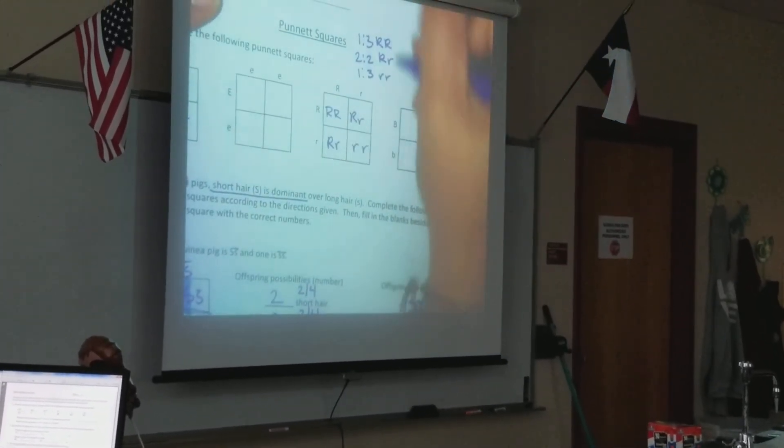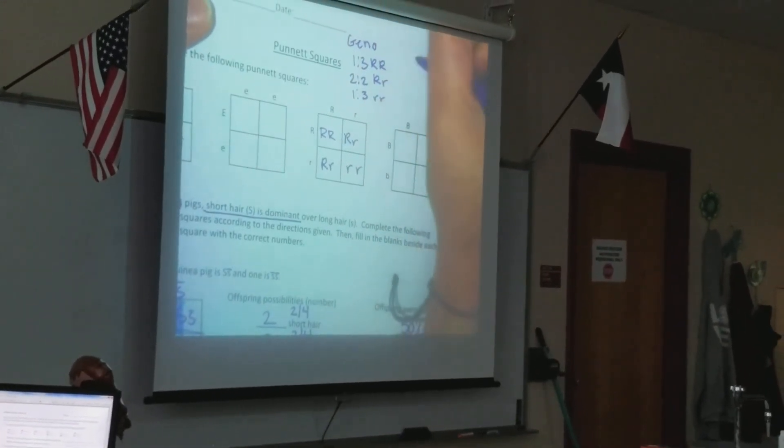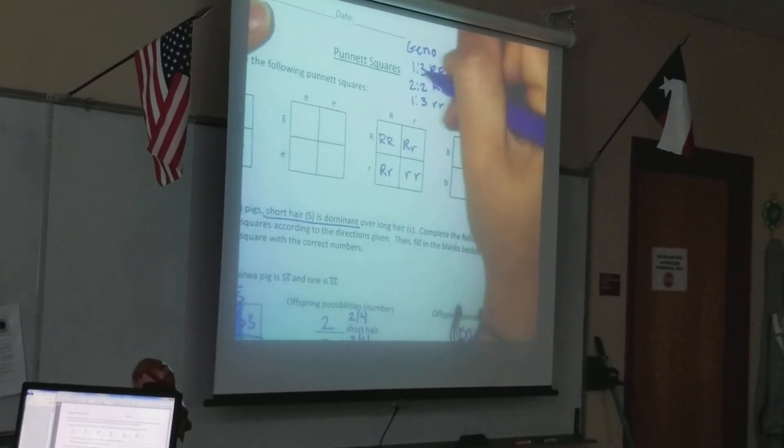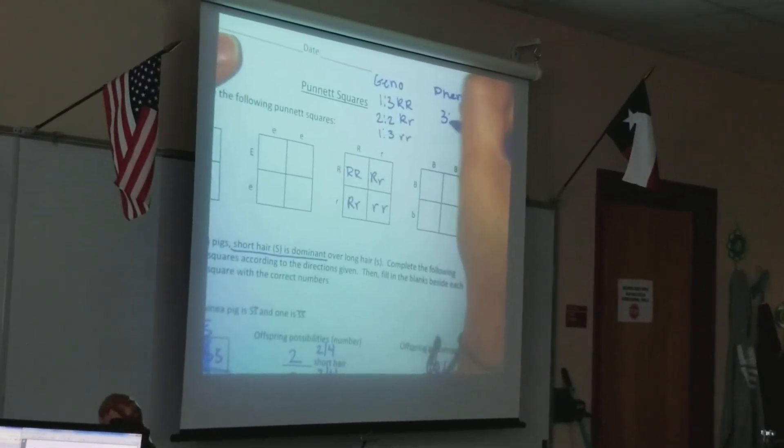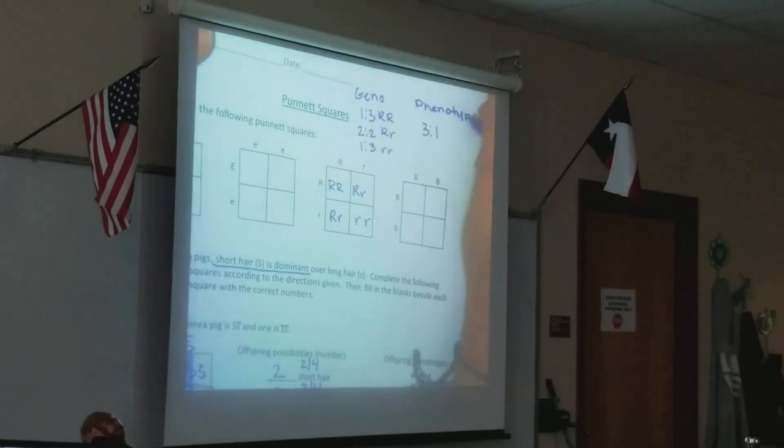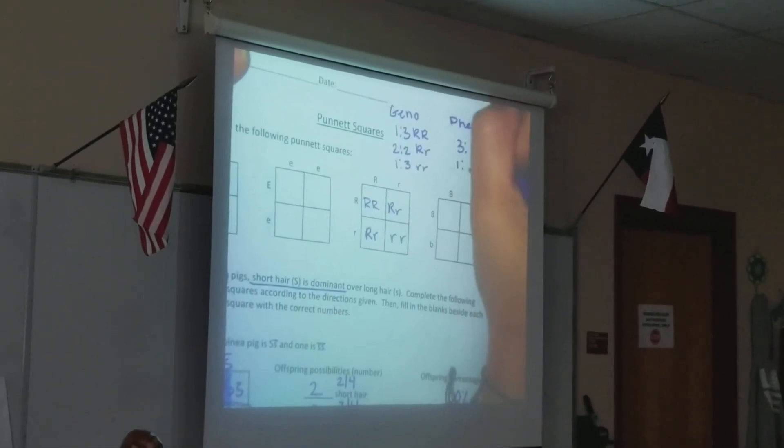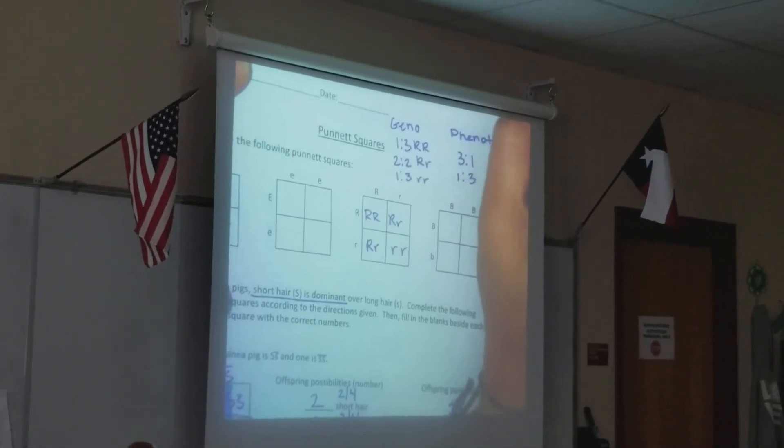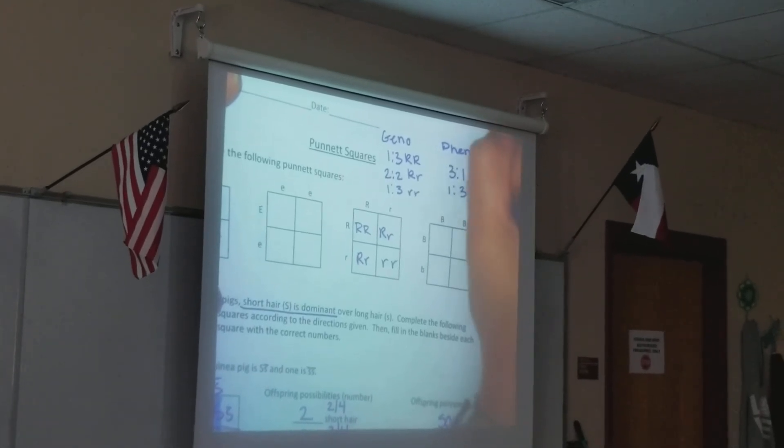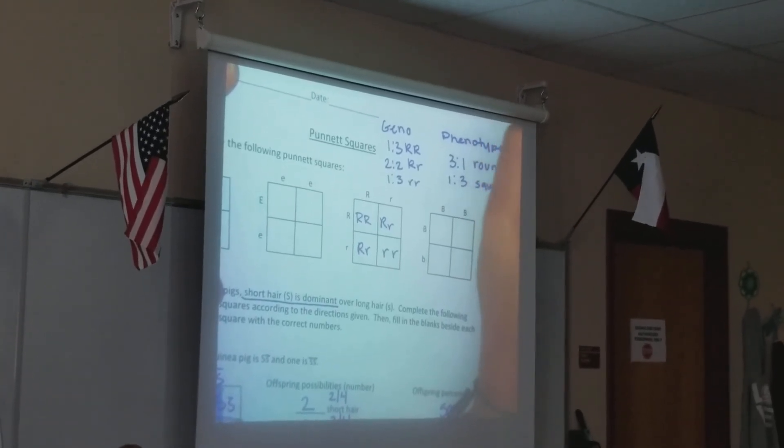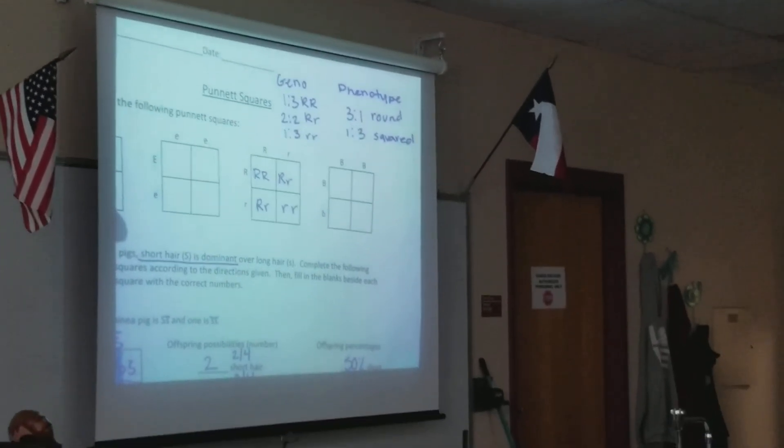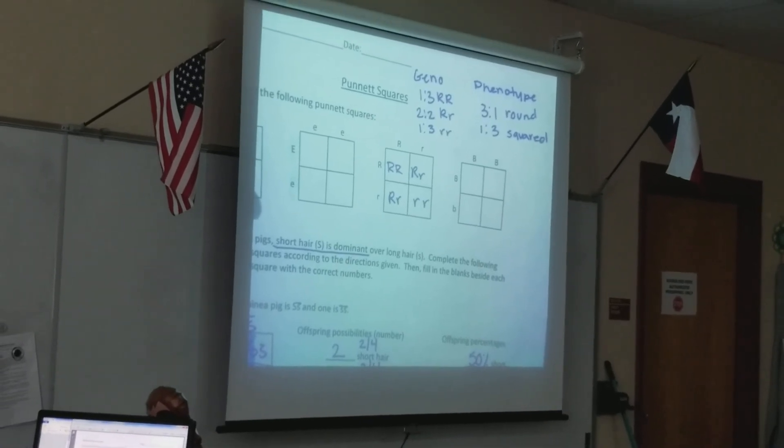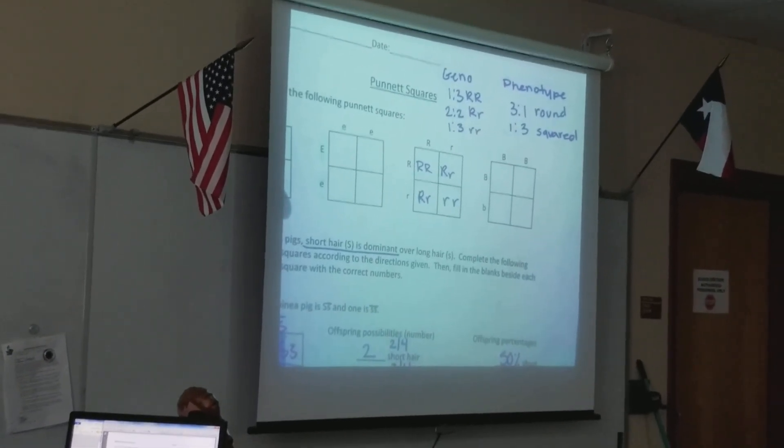You would have, so this would be your genotype for that. Your phenotype for that one would be that I have three that are whatever R is and one that is not. So, like, let's say R stood for round. So I would have three that are round and one that is squared, or whatever trait they're having you explore. So just because your ratios and genotypes are one thing, that doesn't mean that in phenotypes they'll be exactly the same because of that law of dominance. We're good with it? Okay.